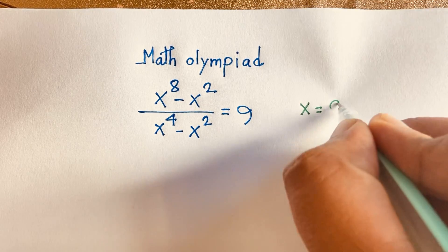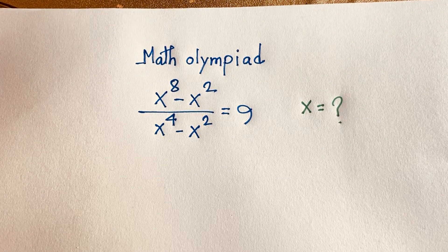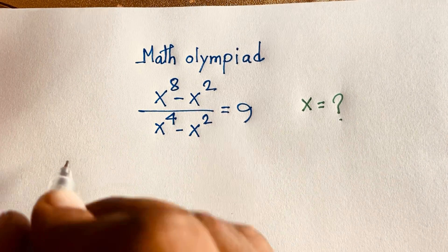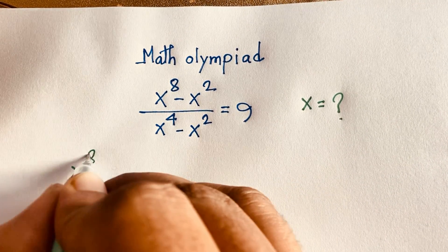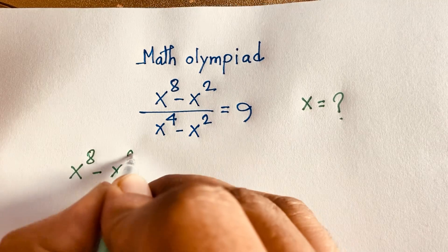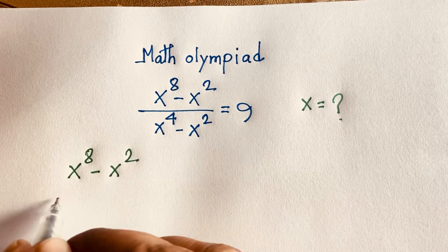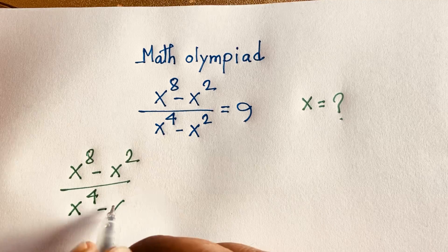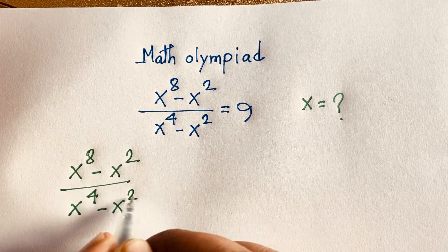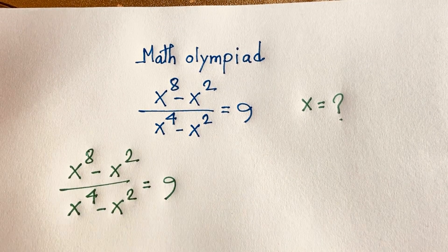So how do we solve this interesting math olympiad question? Our equation is x to the power 8 minus x to the power 2, over x to the power 4 minus x squared, is equal to 9. This is our question.